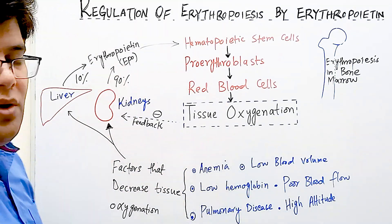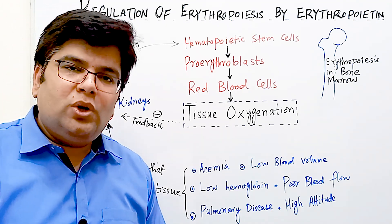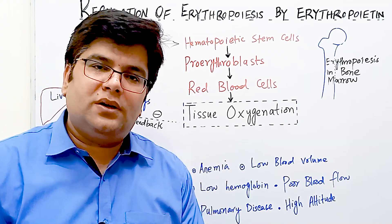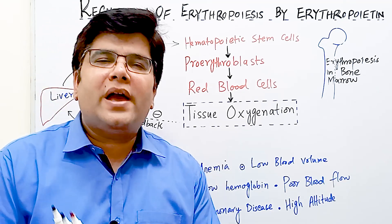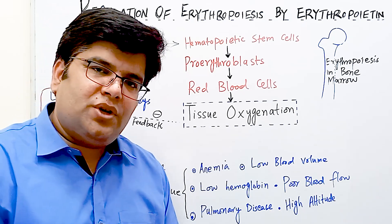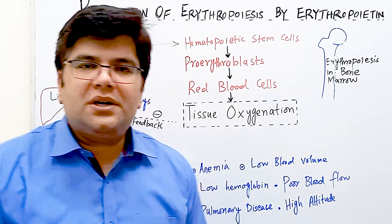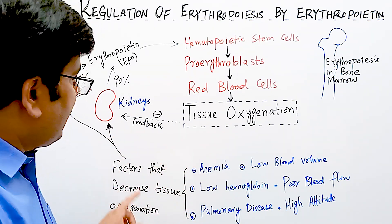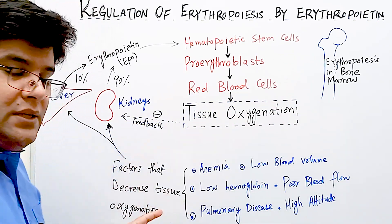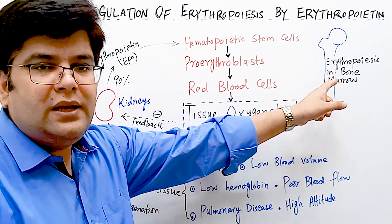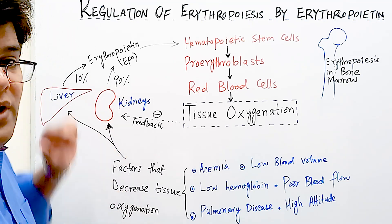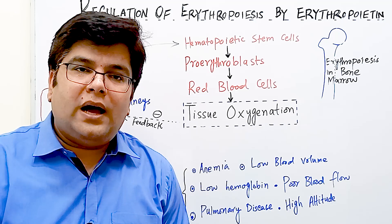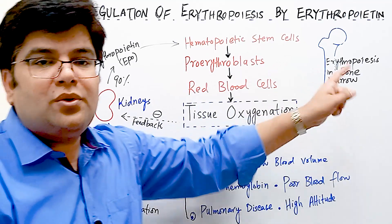Erythropoietin is a glycoprotein hormone produced mainly from the kidneys and also from the liver, with a molecular weight of 34,000. It acts on the bone marrow to increase red blood cell production. If erythropoietin is absent, very little red blood cell production occurs. Hypoxia is an important stimulus that increases erythropoietin production, which then directly stimulates bone marrow — hypoxia itself cannot directly stimulate bone marrow.